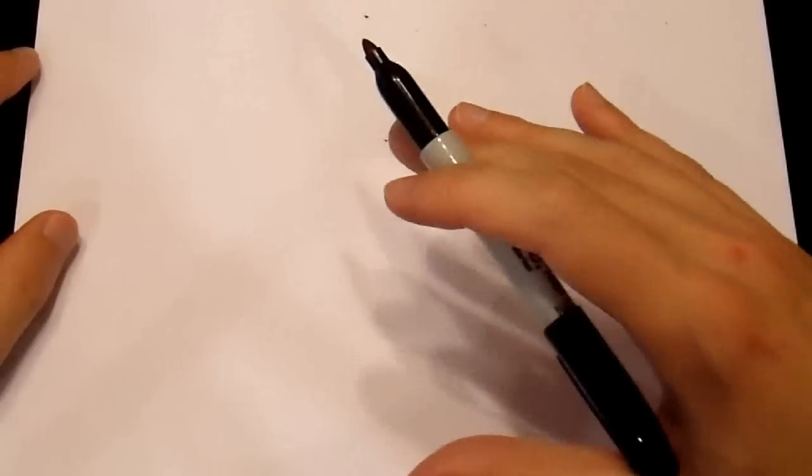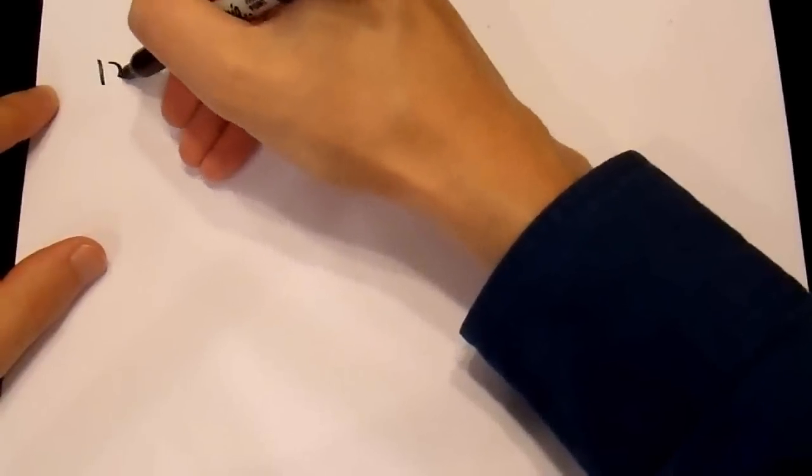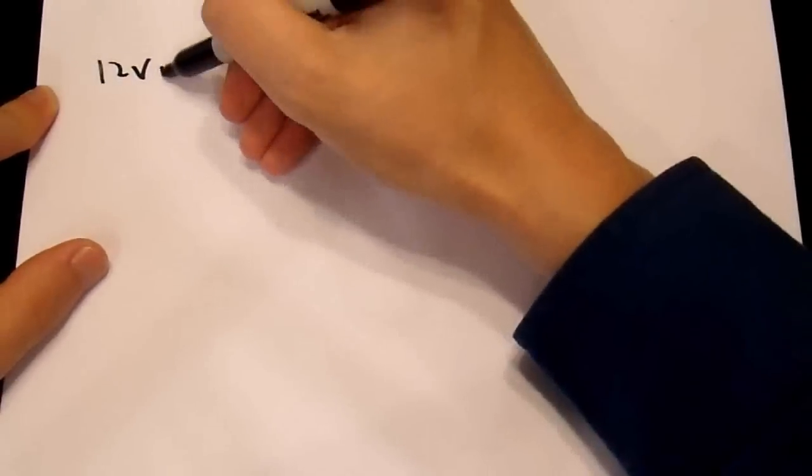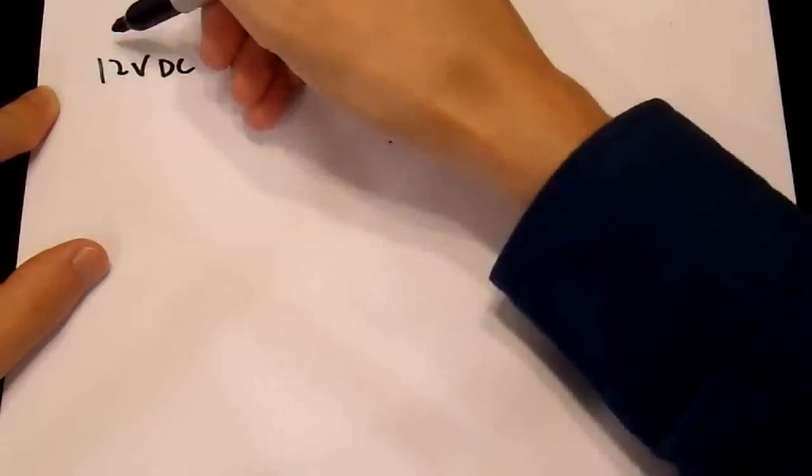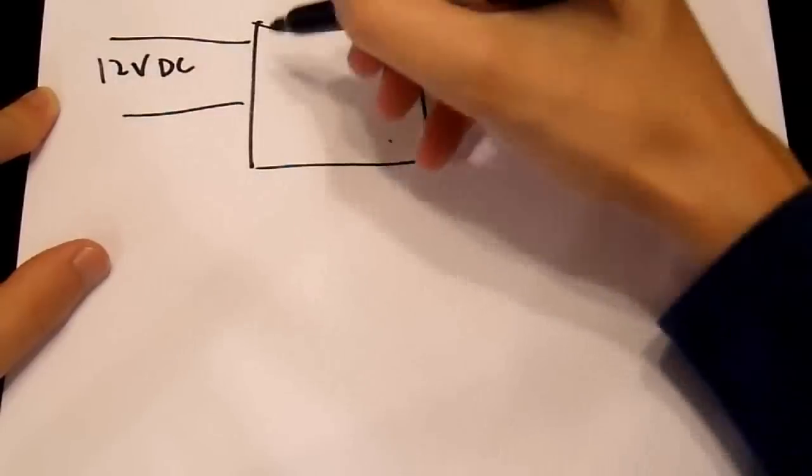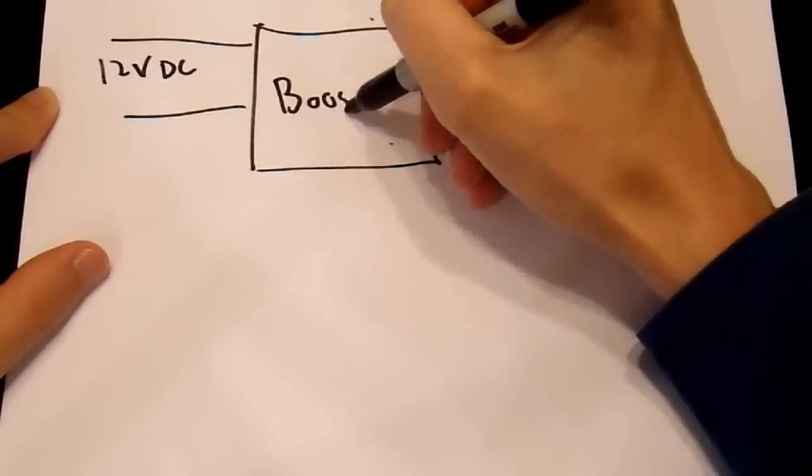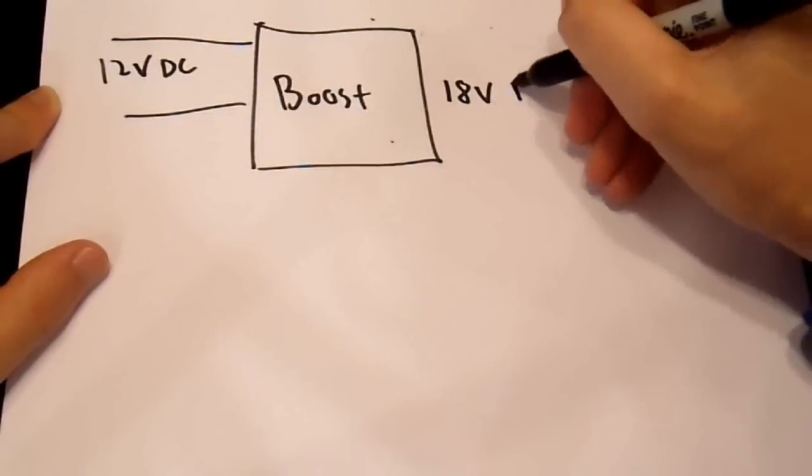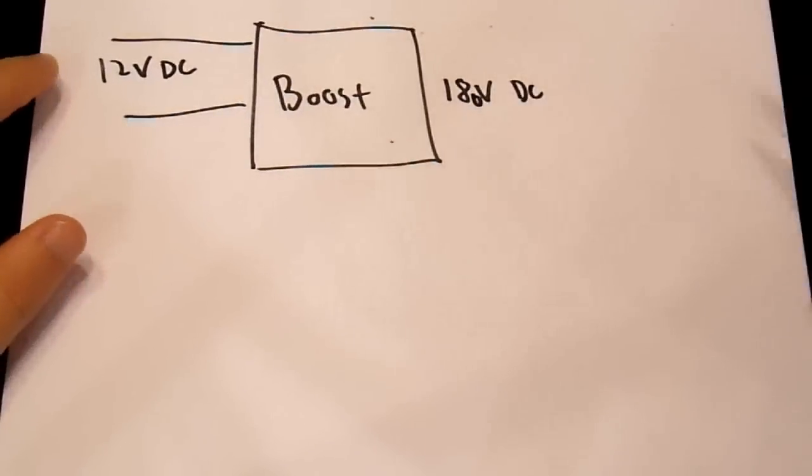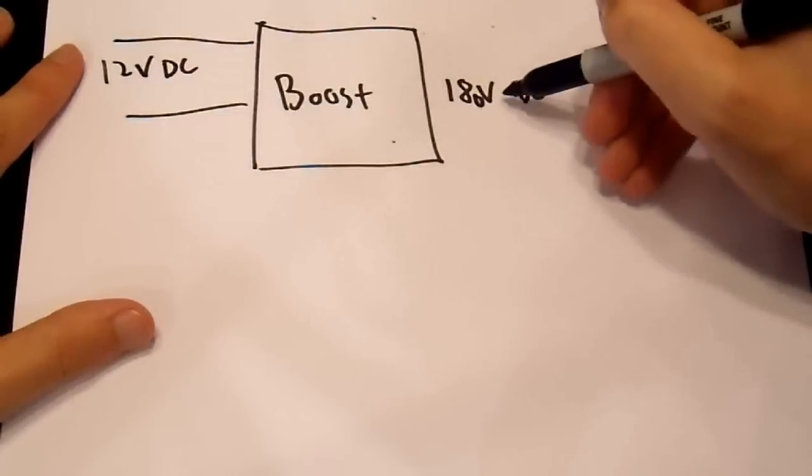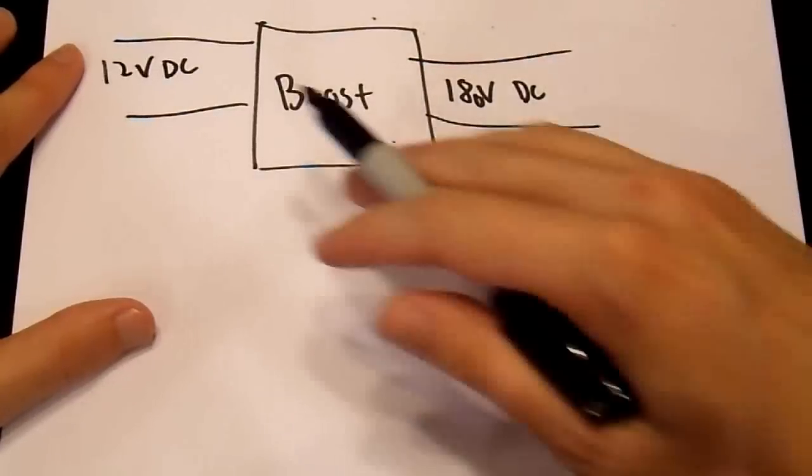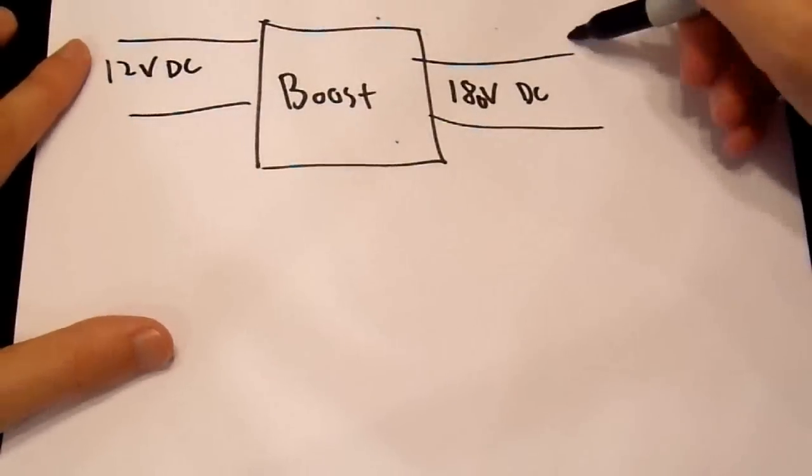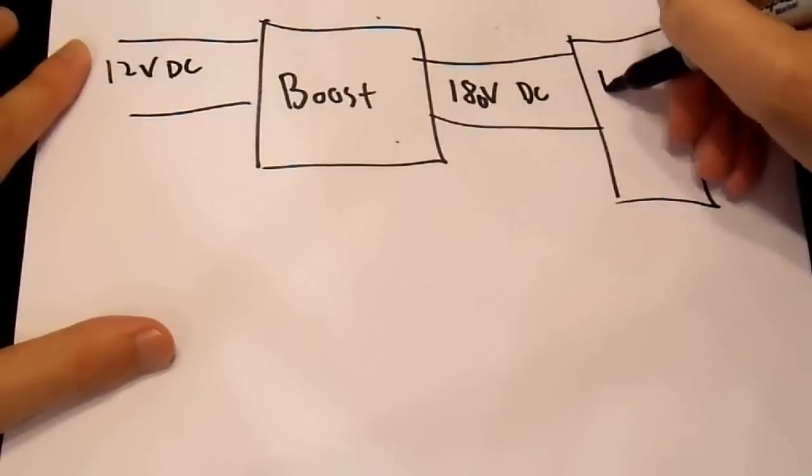So let's first start with a general block diagram of how an inverter works to describe this difference here. You start with 12 volts, 12 volts DC, as from a car battery. So you get your 12 volts in, and it goes into a block here. We'll call this the boost stage. 12 volts DC in, and maybe 180 volts DC out. So you now have 12 volts DC in, 180 volts DC out, and then it goes into another block.